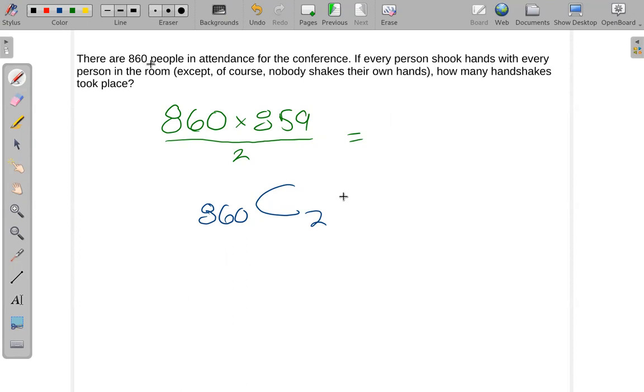And so that would be 860 factorial divided by 860 minus two factorial, and also on the bottom we would have our two factorial. And if you clean that up, it eventually cleans up to this green thing above.